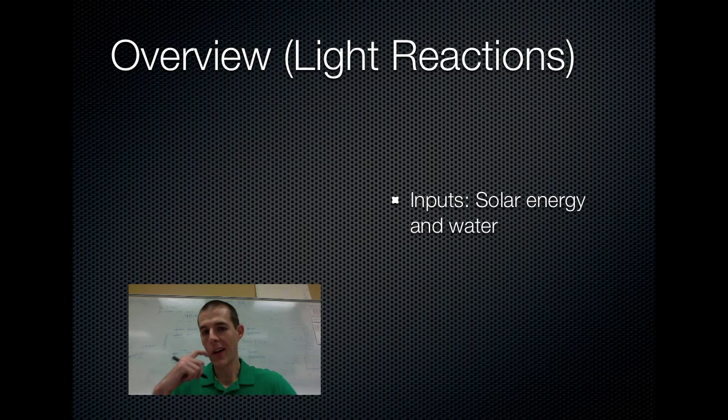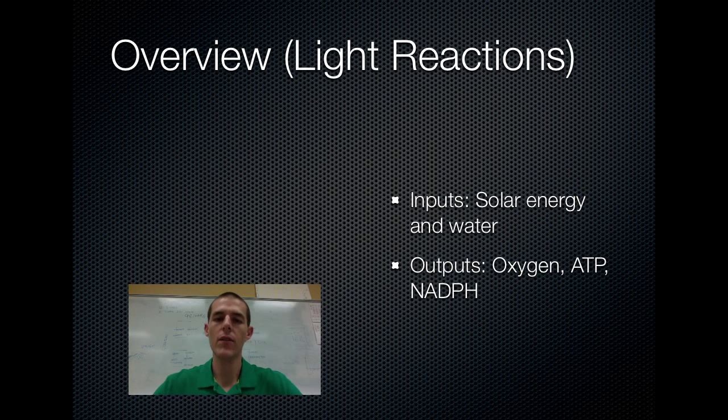Here's a quick overview of what you need to know for the light reactions. Input, solar energy and water. So these are the things that go in. The output is oxygen, ATP, and NADPH. NADPH is just like NADH, but it's got that P in it because it hangs out with plants. So solar energy and water in, oxygen, ATP, NADPH out. And like I said earlier, whole purpose of the light reactions is to produce energy that will go over to the dark reactions.